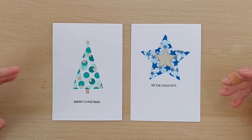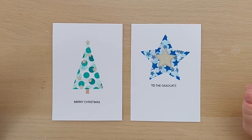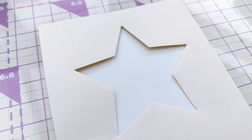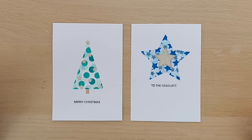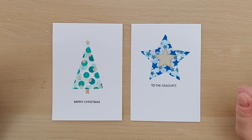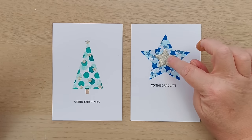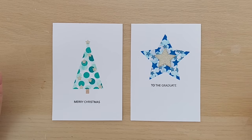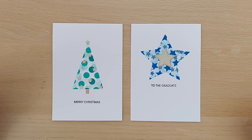And here we have a graduation card. I used a star die to cut a star shape from some masking paper and then used various size stamps and some blue inks to fill the aperture with blue stars. I added a gold glitter star there in the middle and a to the graduate stamp and I really like the way this one's turned out.